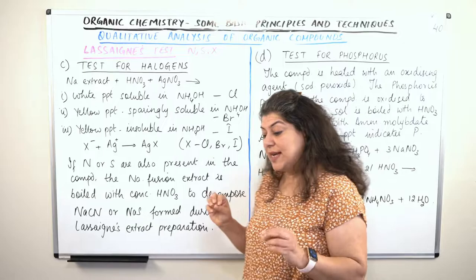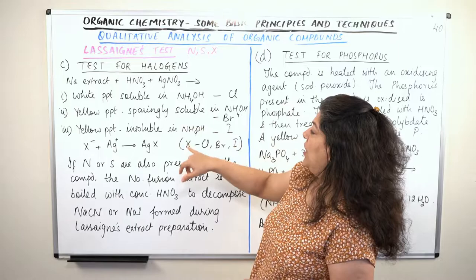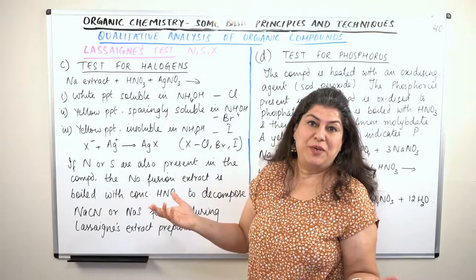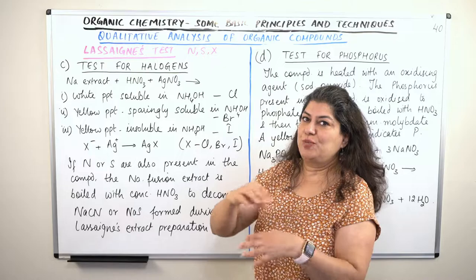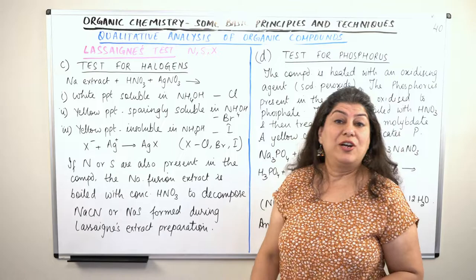The ammonium hydroxide is added to confirm the presence of the white precipitate. The moment you get a white precipitate, you get an idea that this must be chlorine. When you add ammonium hydroxide solution to it, it dissolves and the white precipitate disappears — just like when you add sugar to water, the sugar disappears. Similarly, the white precipitate dissolves and disappears. This shows the presence of chlorine.